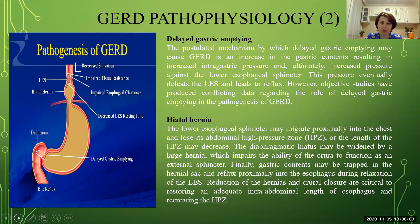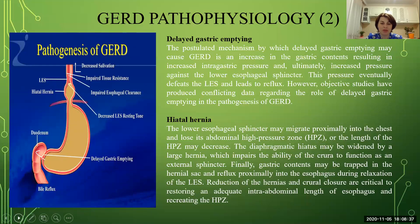However, objective studies have produced conflicting data regarding the role of delayed gastric emptying in the pathogenesis of GERD. Regarding hiatal hernia: the lower esophageal sphincter can migrate into the chest and lose its abdominal high pressure zone, which is important protection against reflux of acidic gastric content. The diaphragmatic hiatus may be widened by a large hernia, impairing the ability of the crura to function as an external sphincter. Gastric content may also be trapped in the hiatal hernia sac and reflux proximally into the esophagus during lower esophageal sphincter relaxation. Reduction of the hernia and crura repair are critical to restoring adequate intra-abdominal esophageal length.